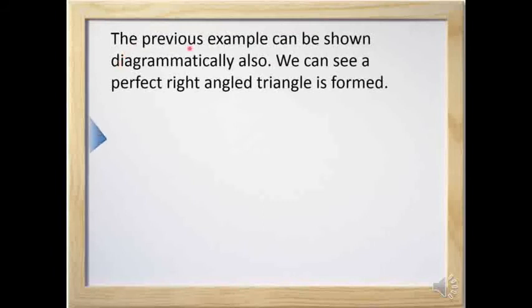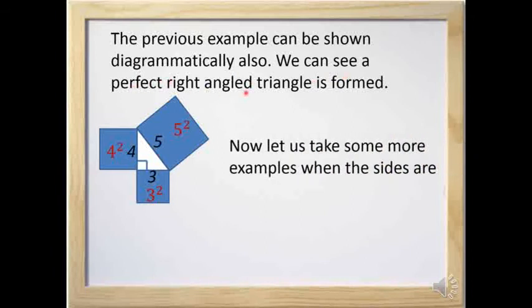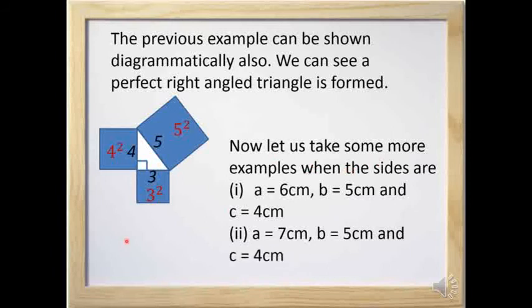The previous example can also be shown diagrammatically — we can see a perfect right angle triangle is formed. Now let us take some more examples: when sides are a = 6 cm, b = 5 cm, c = 4 cm; and another problem where a = 7 cm, b = 5 cm, c = 4 cm. Let us find out whether these measurements make a right angle triangle or not.